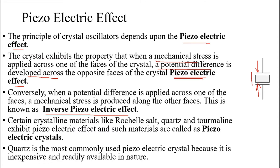The inverse piezoelectric effect works the other way: we apply a potential difference to the crystal and the output we get is mechanical vibrations. In our crystal oscillators, we use the inverse piezoelectric effect — we apply an AC signal to the crystal, it produces mechanical vibrations, and from those vibrations we obtain a resonant frequency.